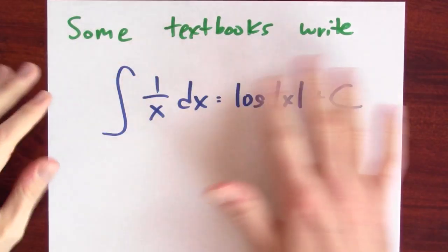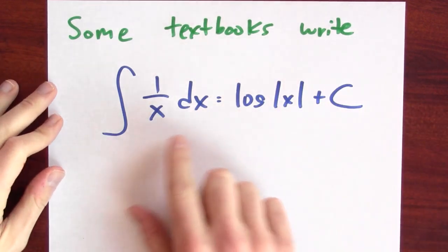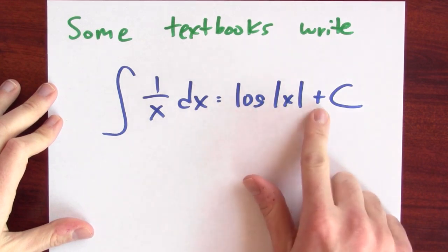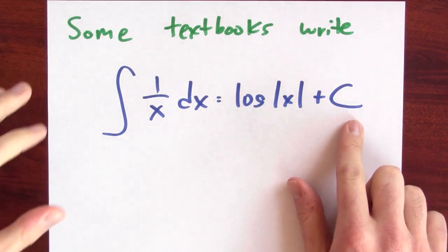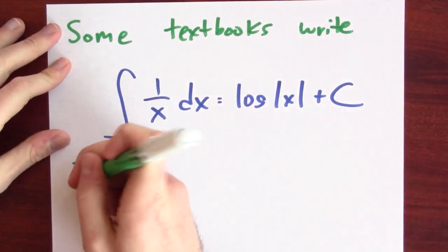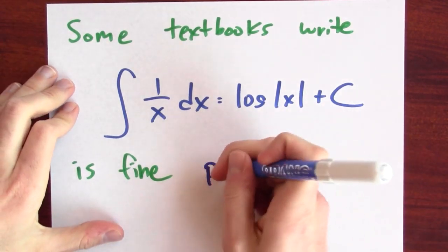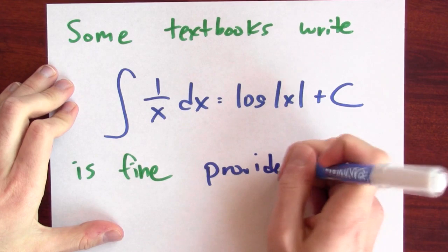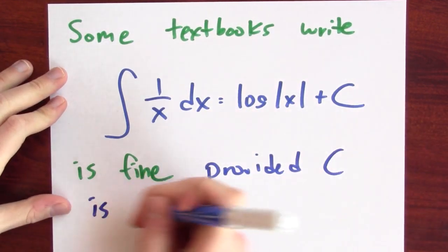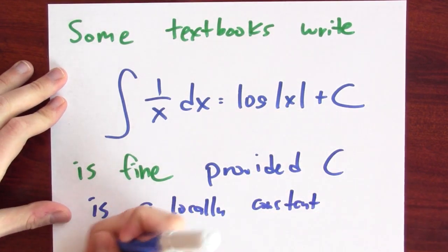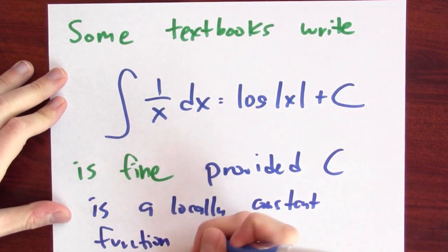Here's the sad truth. In spite of all of this, some textbooks nevertheless write that the most general antiderivative of 1/x is log|x| + c. All of this provides a sneaky way out. This is perfectly fine, provided what? Provided that c isn't a constant, but c is a locally constant function of x.